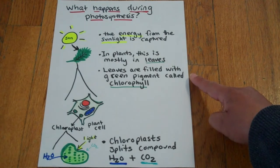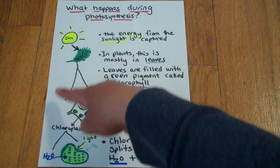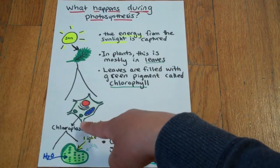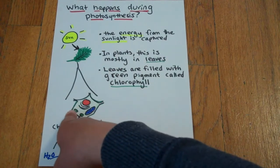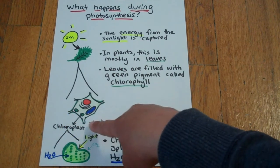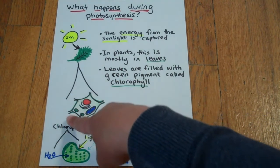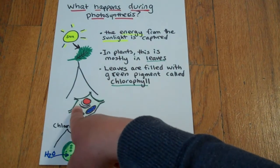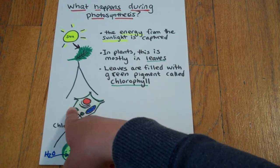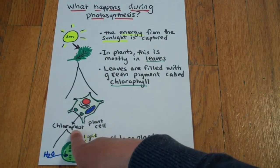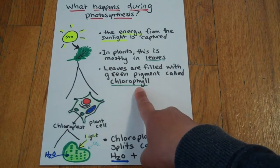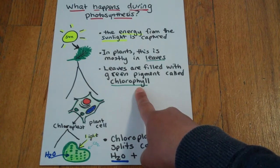Leaves are filled with green pigment called chlorophyll. So if we zoom in to a leaf, we would find these things called plant cells. A plant cell has two extra organelles: a cell wall for an extra stiff layer, but the most important part for this discussion of photosynthesis are these organelles called chloroplasts. They're filled with a green pigment called chlorophyll that's attracting the green light.